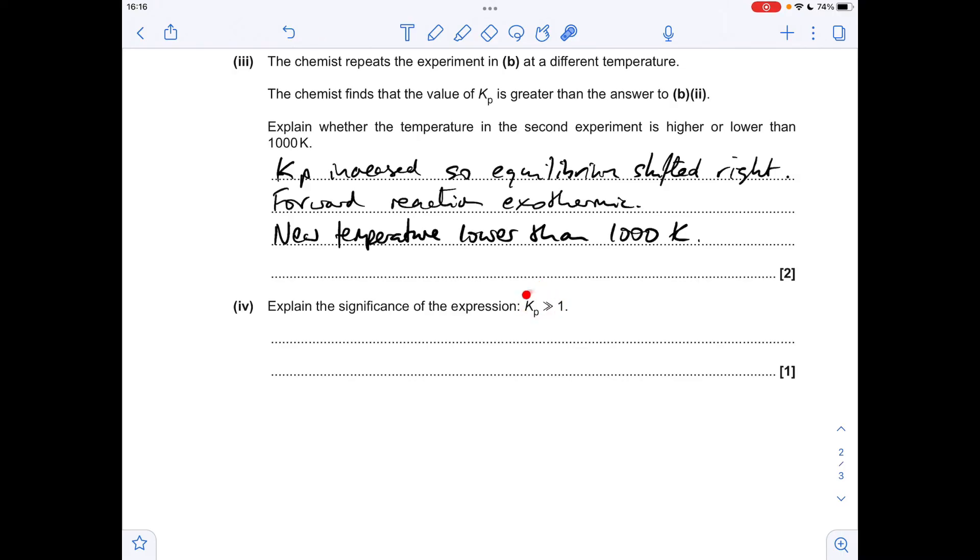And finally, what's the significance of this expression here? Well, this double greater than sign means that Kp is significantly greater than 1, so the equilibrium position is far to the right or significantly to the right.